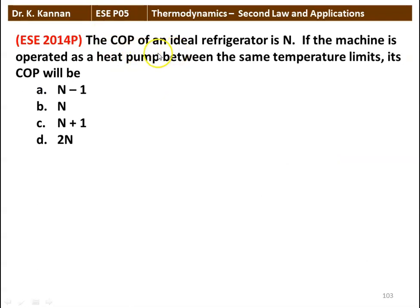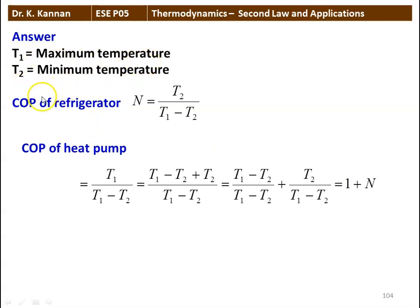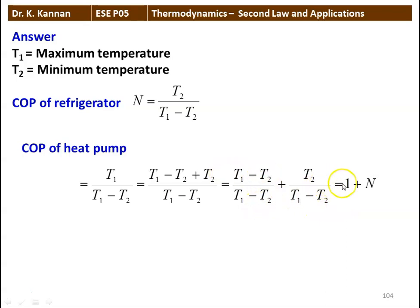Next question: the COP of an ideal refrigerator is N. If the machine is operated as a heat pump between the same temperature limits, its COP will be N−1, N, N+1, or 2N. The answer is N+1. COP of refrigerator N = T2/(T1−T2). COP of heat pump = T1/(T1−T2). Rearranging the numerator: (T1−T2)/(T1−T2) + T2/(T1−T2) = 1 + N. So COP of heat pump = N + 1.